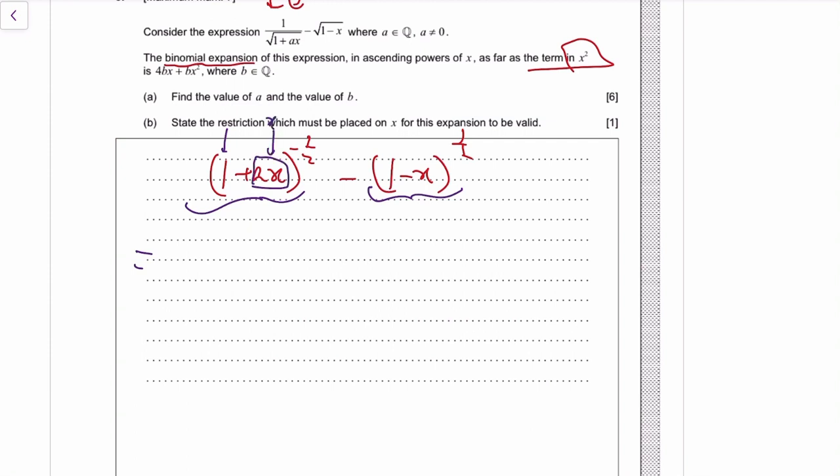So it will be 1 plus the power, n is the power, and then times x plus the power and then the power minus 1 over 2 factorial, and then the x squared except x is ax.